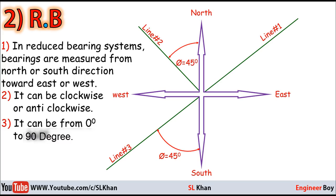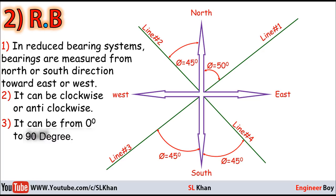Now, what about the bearing of line one in the first quadrant? Bearings in the first quadrant are the same in both systems — if a line makes 50 degrees, that's the same in both systems, so there's no difference there. However, for a line in the second quadrant like line four, its bearing in the Reduced Bearing system should be measured anticlockwise from the south. So, to summarize: in the Whole Circle Bearing system, bearing is always measured clockwise from north, ranging from 0 to 360 degrees. In the Reduced Bearing system, it's measured from north or south toward east or west, can be clockwise or anticlockwise, and ranges from 0 to 90 degrees.